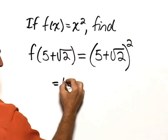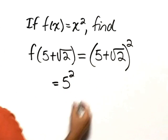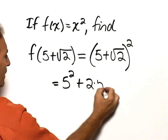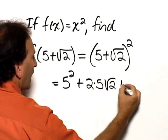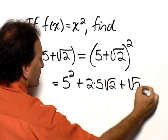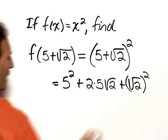This would be equal to 5 squared plus twice the product of 5 times the square root of 2 plus the square root of 2 squared.